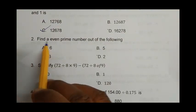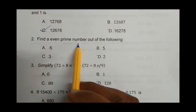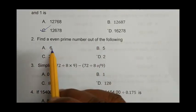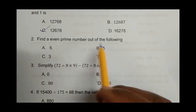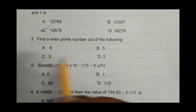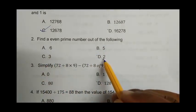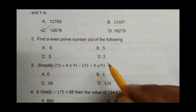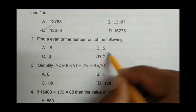Question number 2: Find an even prime number out of the following. 6 is not a prime number. 5 is a prime number but not even. 3 is a prime number but it is not an even number. D, 2 is a prime number and it is the smallest prime number and also it is an even number. So D is the right answer.